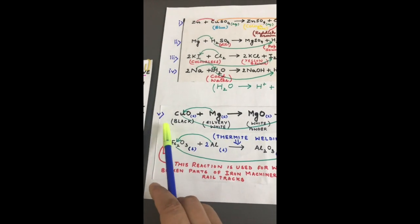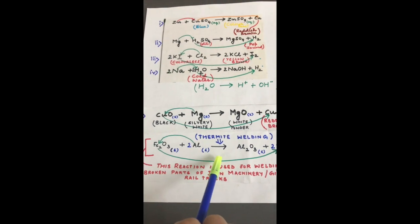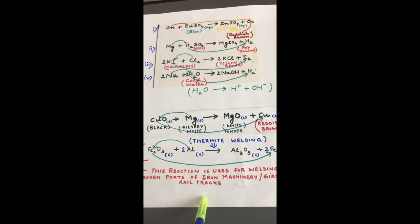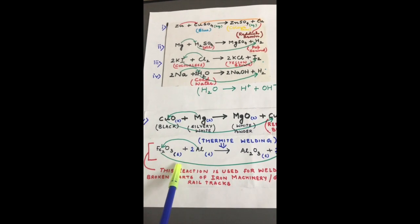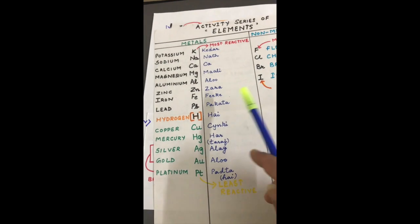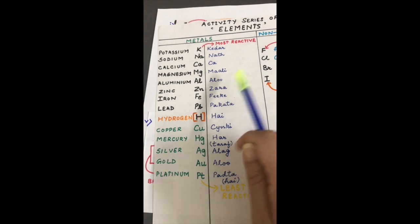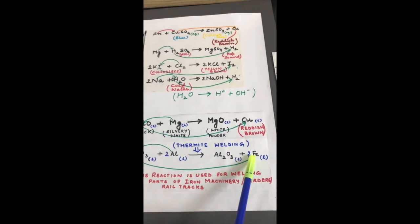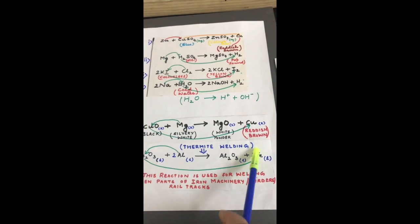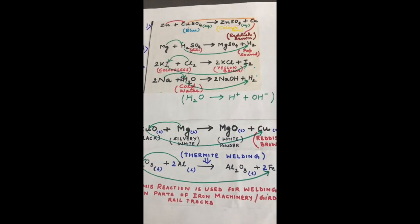Another important example of the fifth type is thermite welding, used for welding iron objects such as iron girders, railway tracks, and iron machinery on a large scale. Ferric oxide (Fe₂O₃) reacts with aluminium. Aluminium is more reactive than iron — you can see aluminium is above iron in the reactivity series — so it displaces iron. Iron is released in liquid form because the temperature is very high, and the other product is aluminium oxide (Al₂O₃), which is a solid.